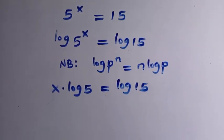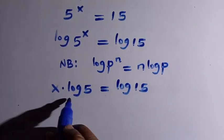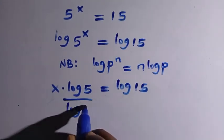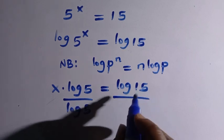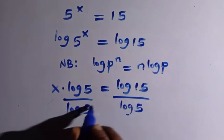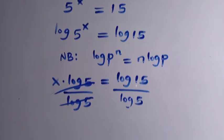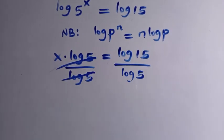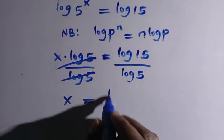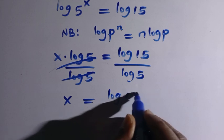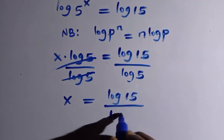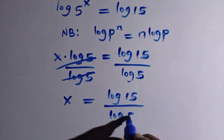Then let's divide both sides by log 5 since what we need here is x. So we have to divide both sides by log 5. When log 5 cancels log 5, we have x equals log 15 divided by log 5.